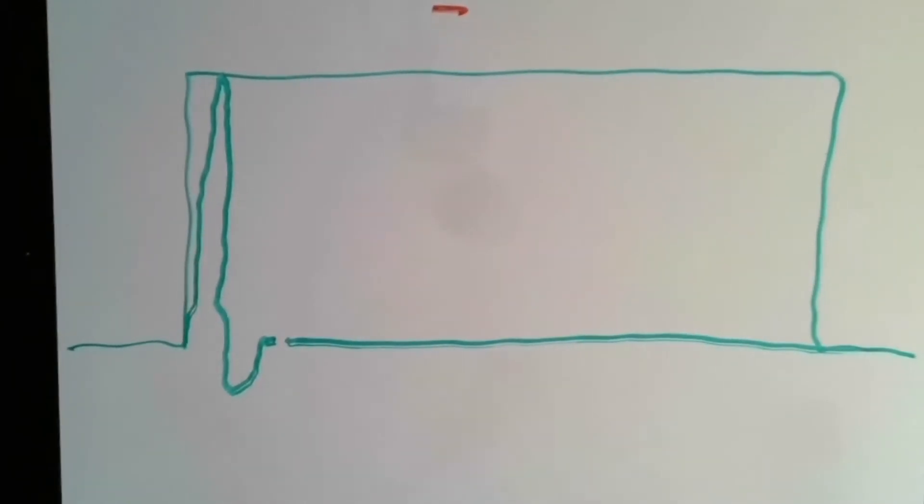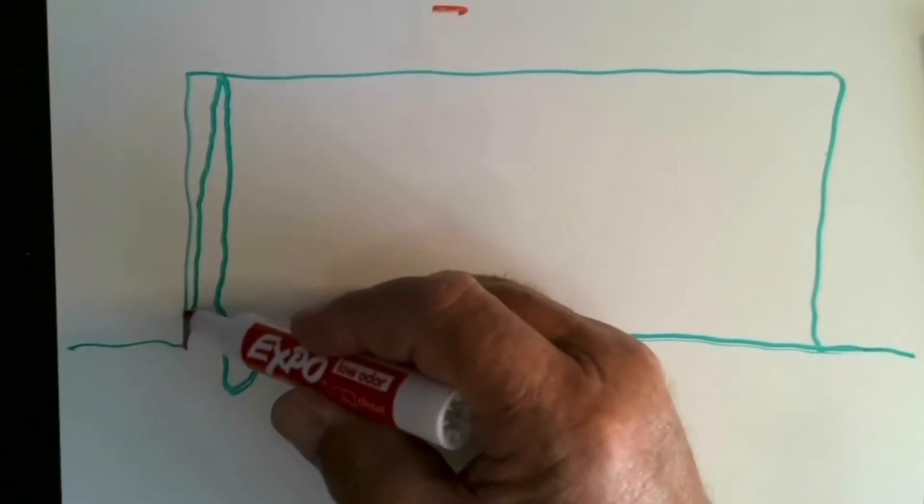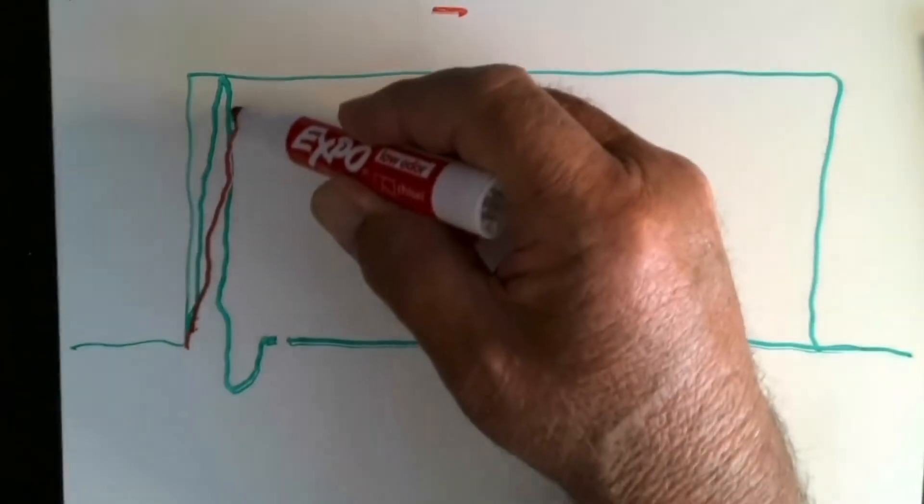Then the mid-range, because it's time aligned, starts at the same point and it does this.